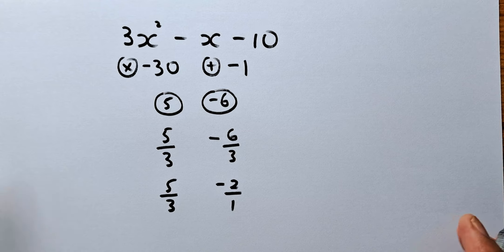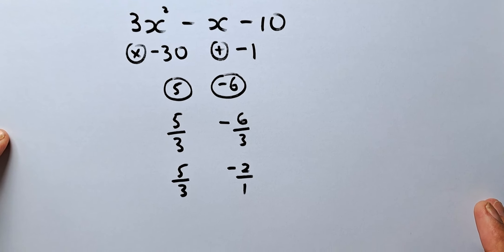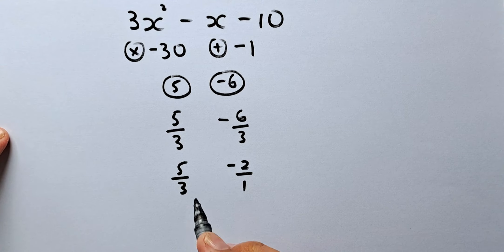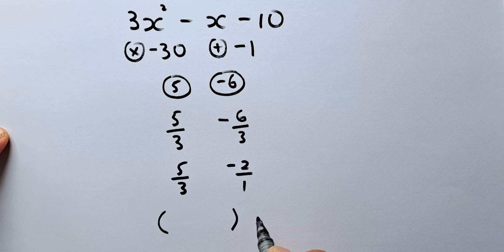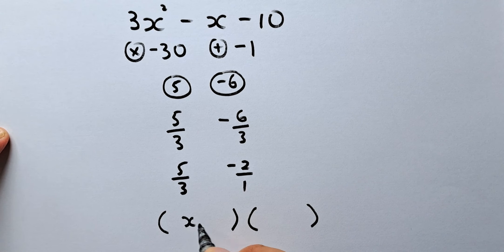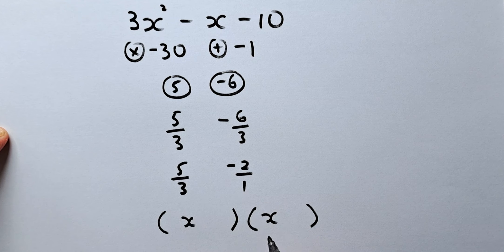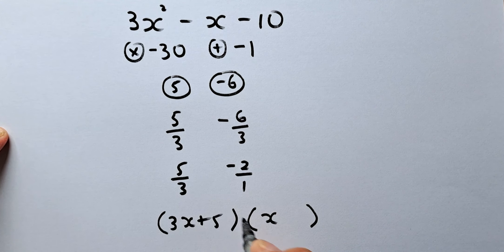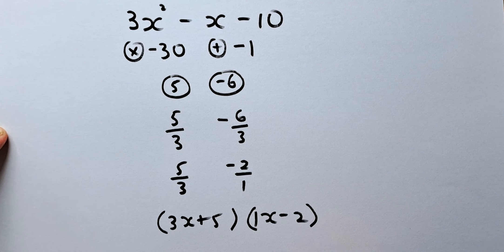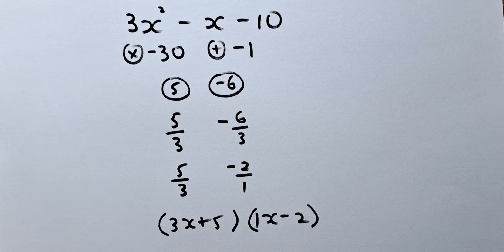Last but not least, we are going to put them in brackets with x and x. The 3 and the 1 are the x number. So 3 goes up plus 5, and 1 goes up minus 2. So that is how you factorize a quadratic equation.